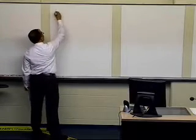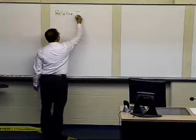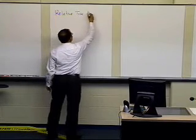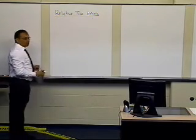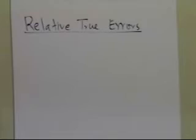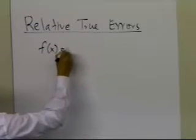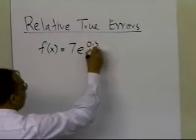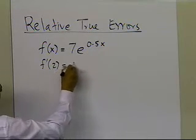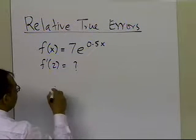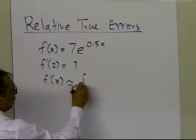In this segment, we're going to talk about relative true errors. And let's go ahead first to see why we need to study relative true errors. Let's recall the example where we were asked to take the function 7e to the power 0.5x, and find f prime of 2 by using approximate formulas for the derivative of the function being given as follows.